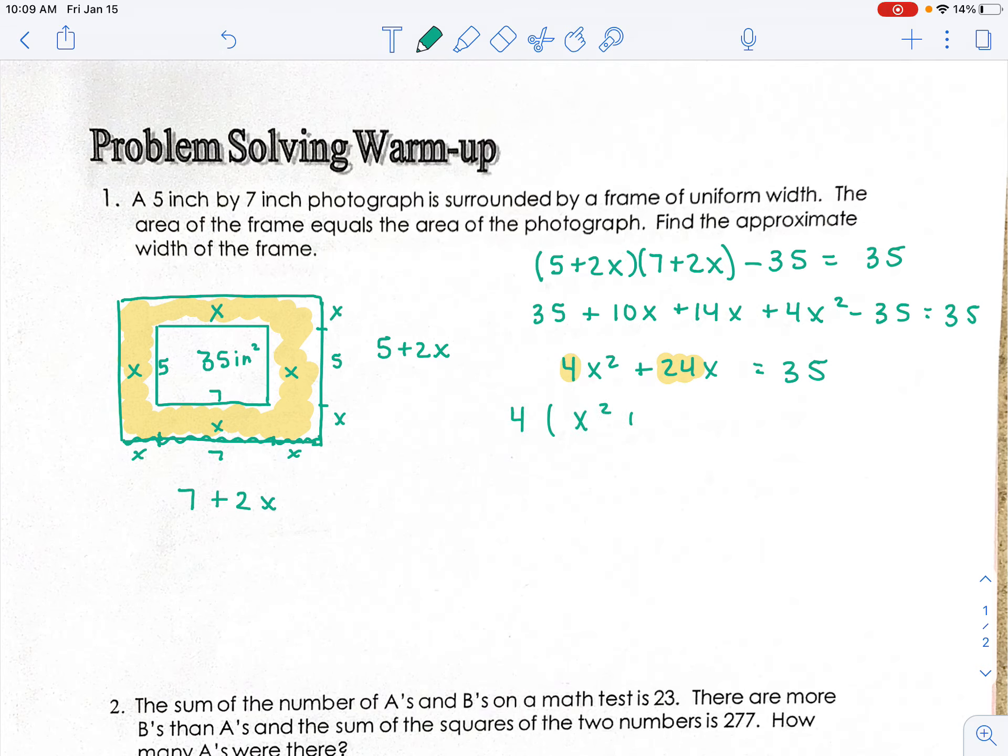So for completing the square, x's are isolated. I'm going to pull out that 4, that a value. x² + 6x = 35. I'm going to add my b divided by 2 value squared to both sides. So b divided by 2, so 6 divided by 2 is 3, 3 squared is 9.